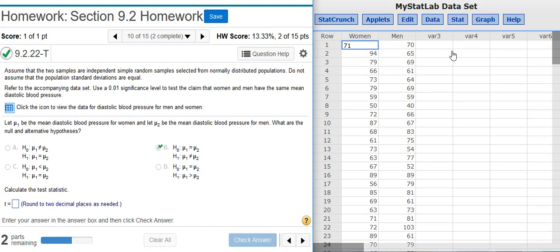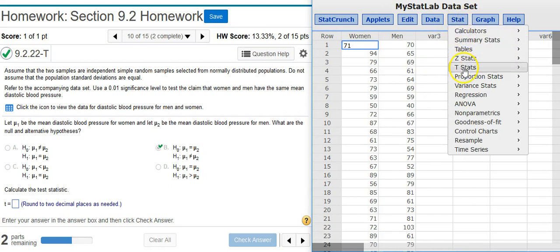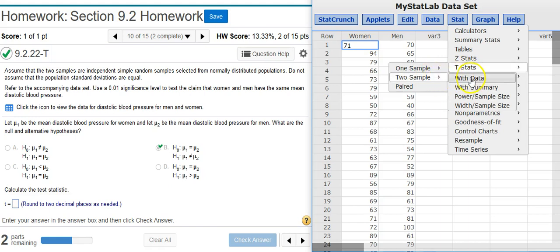And the key question, of course, is do we know what the population standard deviation is? We're asked to assume that they're not equal for each of the two groups, but other than that, we don't know anything about the population standard deviation. Therefore, we're going to use T-scores to calculate our test statistic. So in StatCrunch, I'm going to go to Stat, T-Stats, two samples, because we have two samples that we're comparing, with data, because we have actual data.